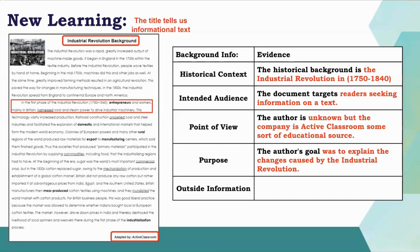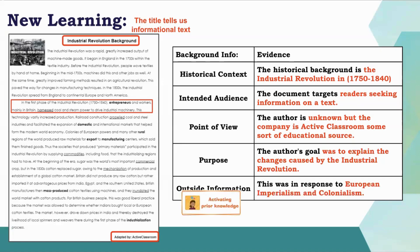The purpose is embedded throughout — it's talking about the changes led by the Industrial Revolution, changes in technology, changes from one cash crop to the next. The outside information is where a student will activate their prior knowledge. Based on a previous lesson a student may make a connection. My connection is that European imperialism and colonialism allowed Great Britain to move into a more industrial society by purchasing certain products from India, Egypt, and the U.S. colonies during this time.